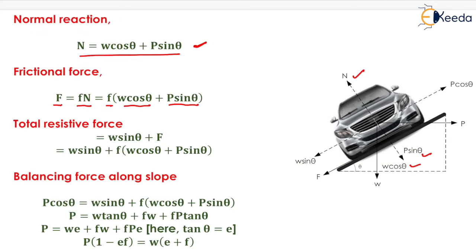The total resistive force equals W sin theta plus F, where F equals f times (W cos theta plus P sin theta). Balancing forces along the slope, P cos theta equals the total resistive force, which is W sin theta plus f into (W cos theta plus P sin theta).